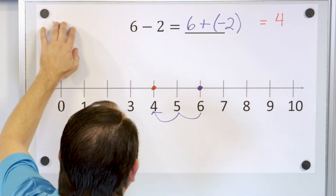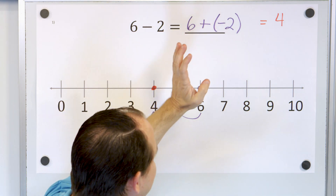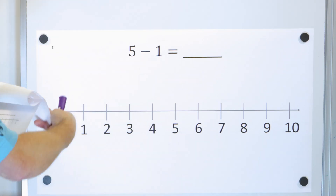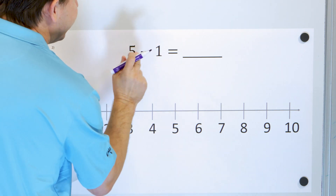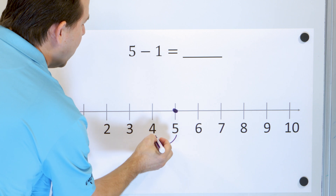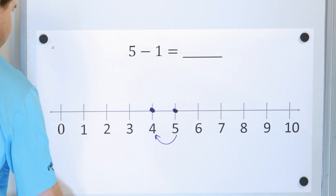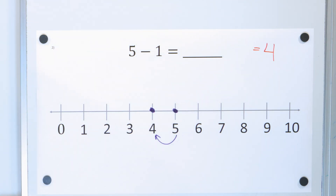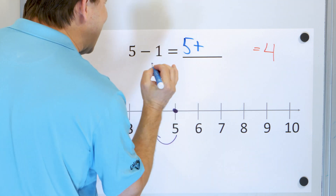The point of this lesson is really not to calculate the answer — the point is I want you to rewrite subtraction as adding the inverse, meaning adding a negative number. Problem number two: five minus one. Where is five on the number line? It's right here, and subtracting one means I start here and go down one position, landing on four. You know the answer is four, but that's not the point. The point is that subtracting one is the same thing as adding negative one.